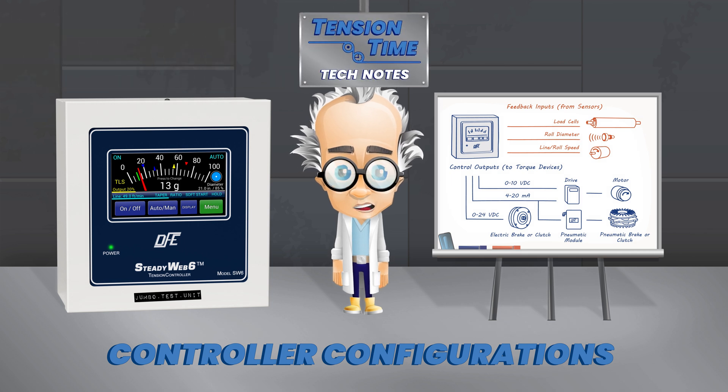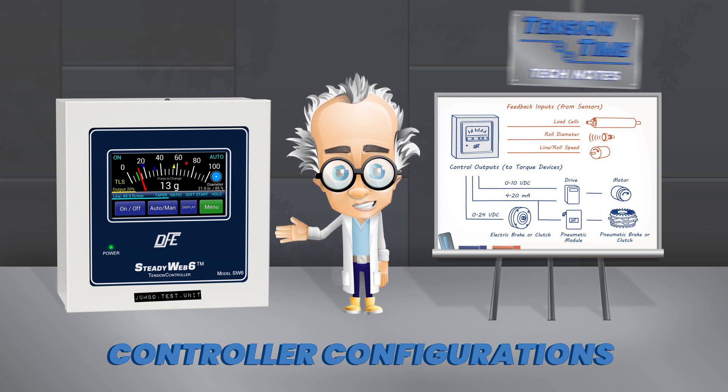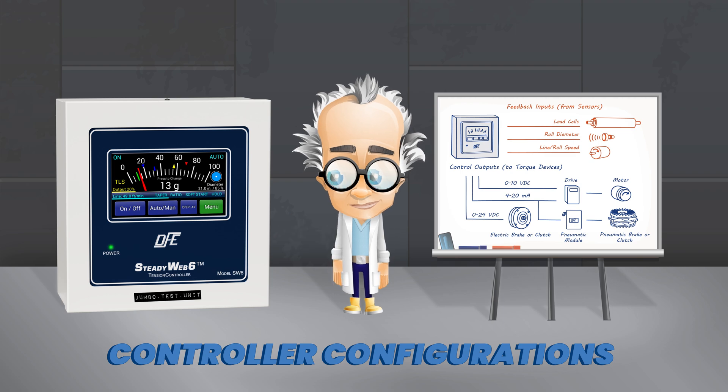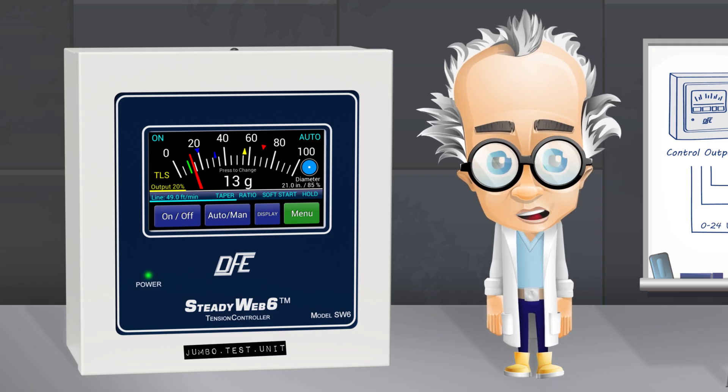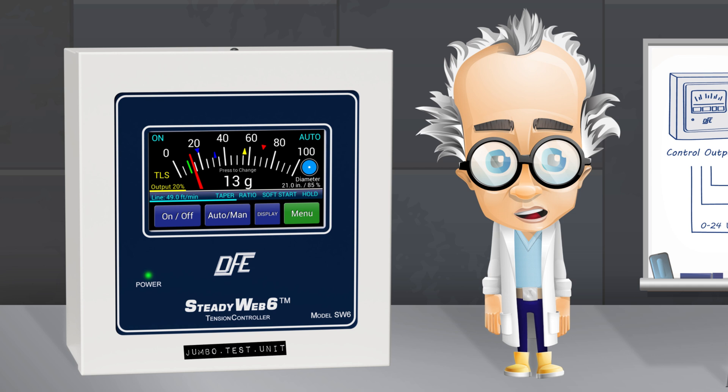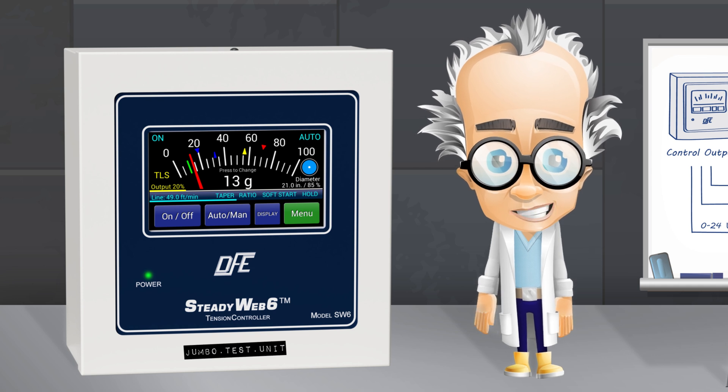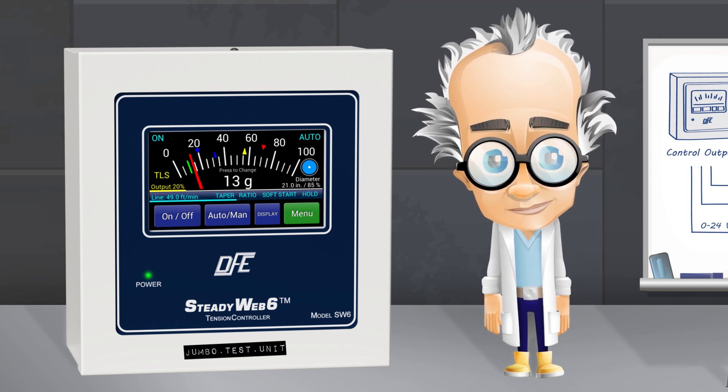In this video we will be presenting a general overview of the SteadyWeb 6 tension controller. The SteadyWeb 6 is a full-featured automatic closed-loop controller used to maintain a set amount of tension for a material being processed.